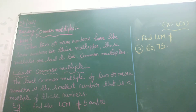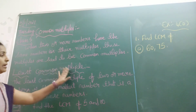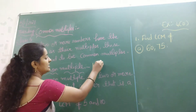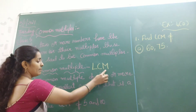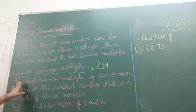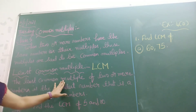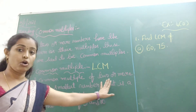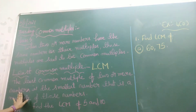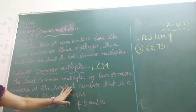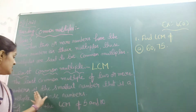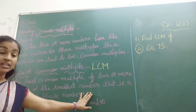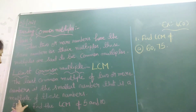Now let's come to the definition of least common multiple — it is nothing but LCM. The least common multiple of two or more numbers is the smallest number that is a multiple of those numbers.